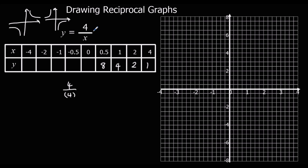Now 4 over 0 — this is the interesting one. This is why we get this shape. You cannot divide by 0. If you try to do this on the calculator, it's going to tell you maths error — you can't do it. I'm going to put a dash there. Some people say infinity; I'm just going to leave it blank.